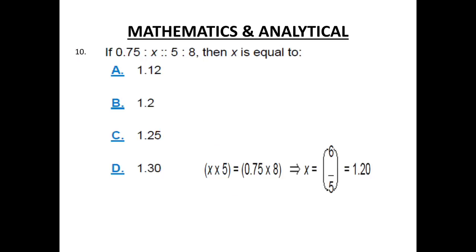Number 10. If 0.75 is to X equals 5 is to 8, then X equals? Cross multiplication question. X into 5 equals 0.75 into 8. When you multiply 0.75 into 8, you get 6. Divided by 5 and the correct answer is 1.2.